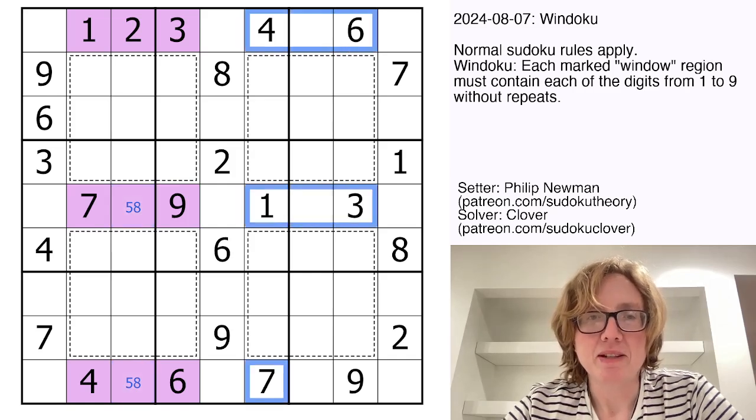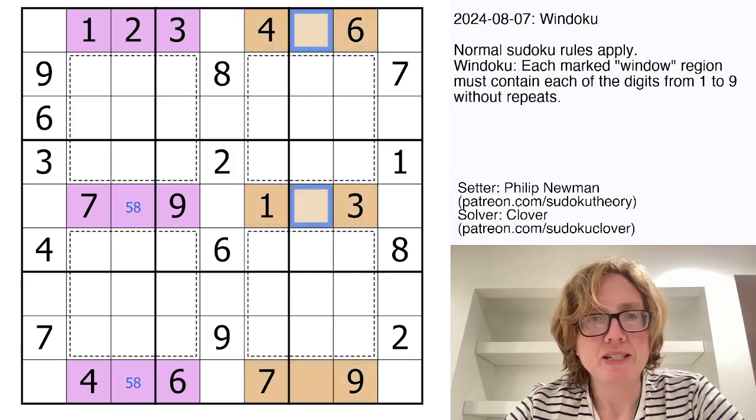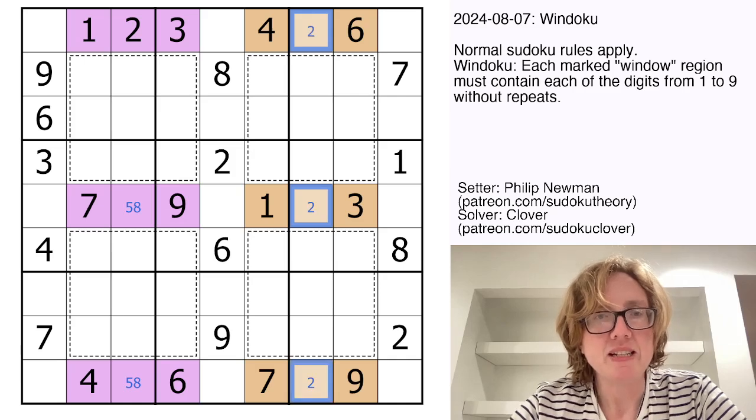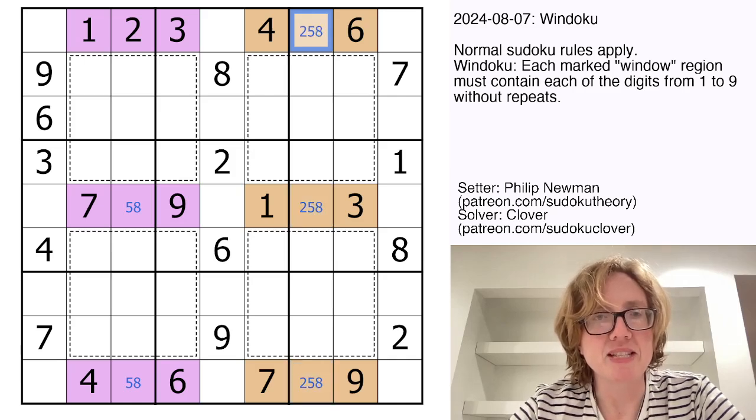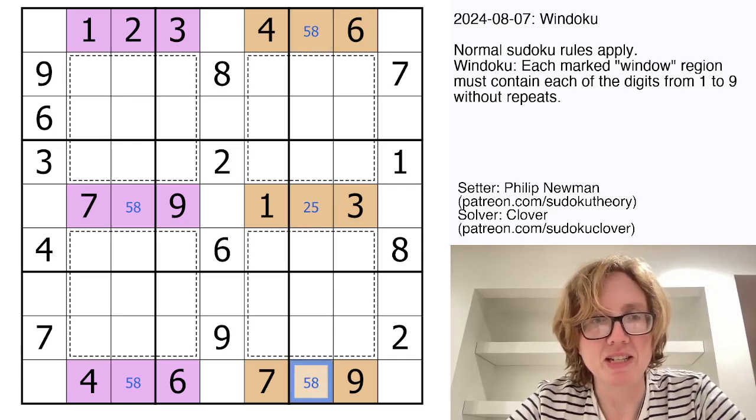We can do the exact same thing over here. Here we're missing only three digits, two, five, and eight. And I'm going to put those in those cells. That can't be a two, that can't be an eight, and that can't be a two. And that actually gives me a two.